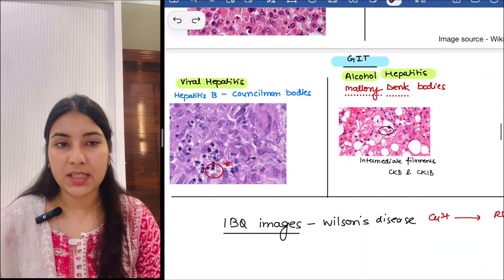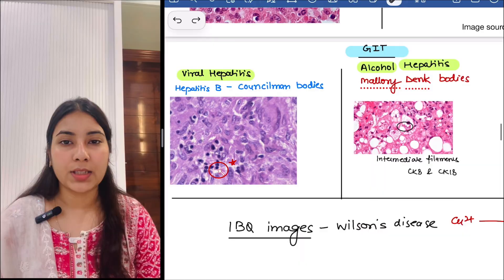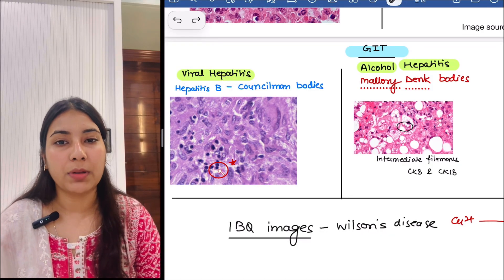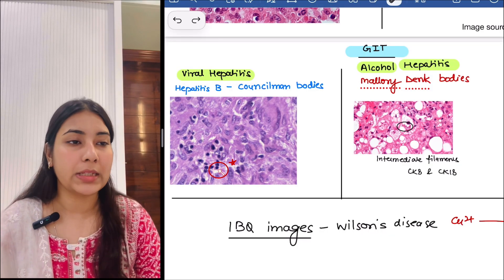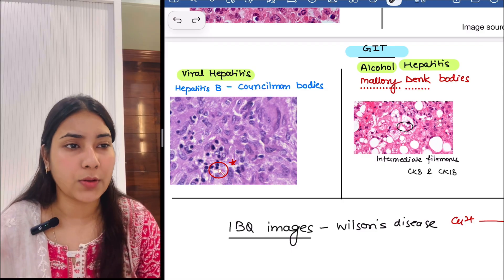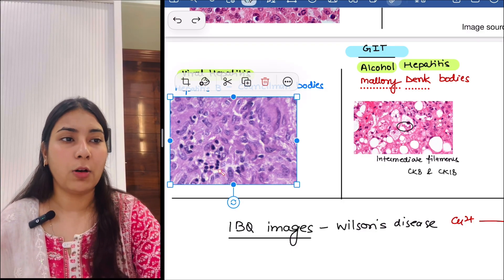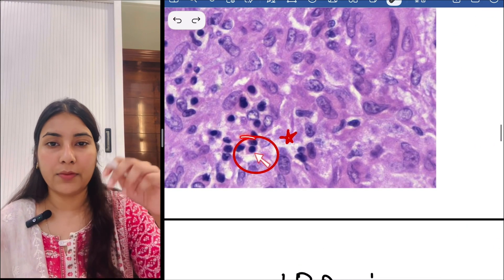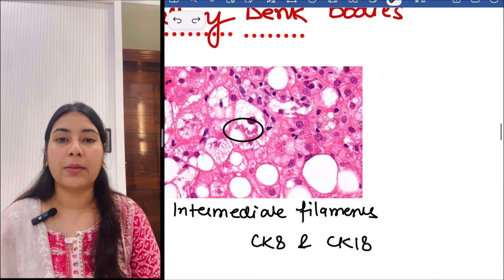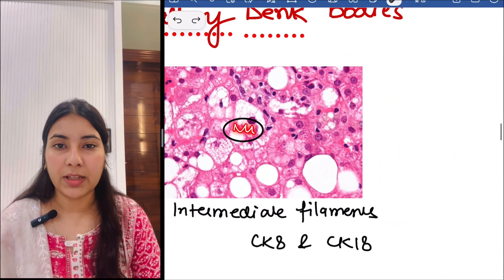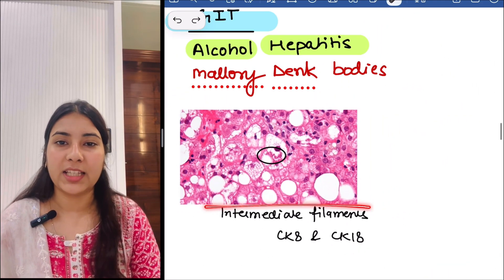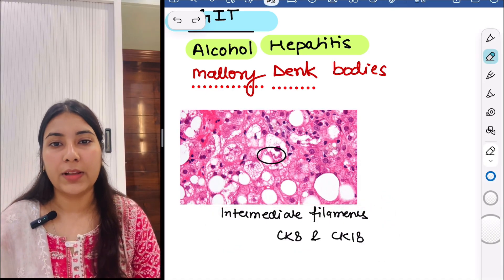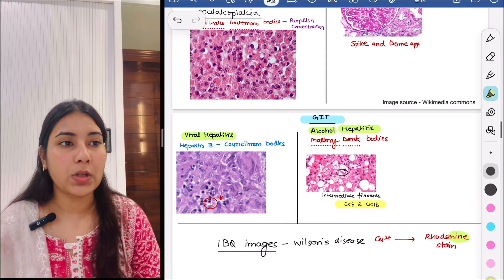Then next system is GIT. The first image is of viral hepatitis. In hepatitis B, we see Councilman bodies, which are apoptotic bodies. Then next is alcoholic hepatitis — we see Mallory-Denk bodies. These are wavy kind of bodies made up of intermediate filaments, cytokeratin 8 and 18 (CK 8 and 18). Then next is Wilson's disease — please see this image from your notes. It contains copper, so the stain used is Rhodanine stain.